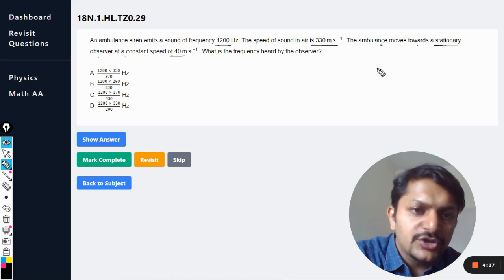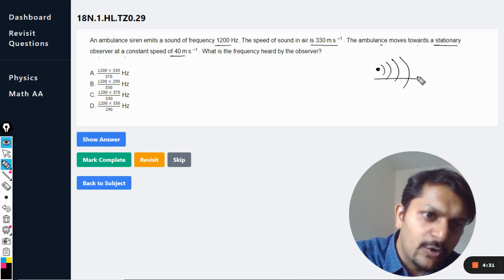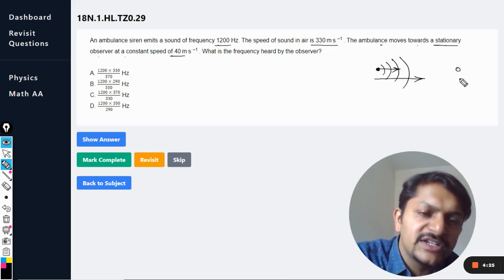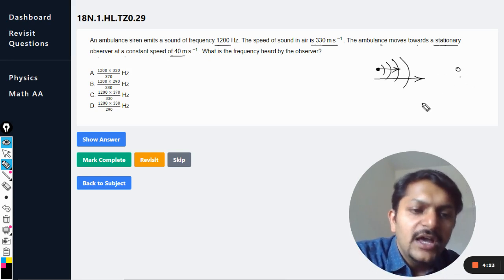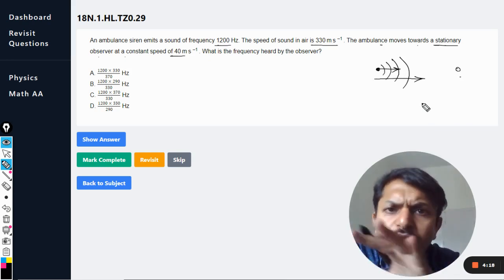What is the frequency heard by the observer? First of all, we are going to make a diagram. Let's say this is the source, or the ambulance in this case. This is the sound which is moving in this direction. The velocity of the ambulance is also in the same direction. This is the observer which is stationary and not moving.